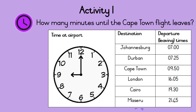8 o'clock in the morning is earlier than 9 o'clock in the morning. How many minutes until the Cape Town flight leaves? The flight to Cape Town leaves at 9:50. You already know that it is 9 o'clock in the morning, so there are still 50 minutes until the Cape Town flight.